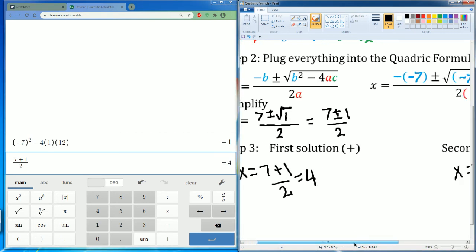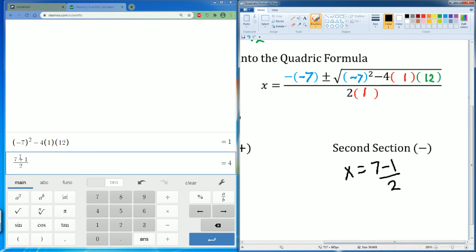Then the second one, I have 7 minus 1. So I changed this to a minus. That became 3.